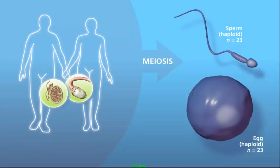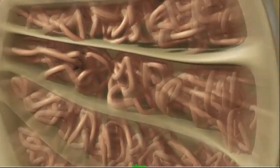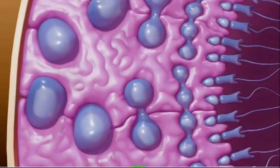Meiosis occurs in special cells called germ cells within the gonads of males and females.